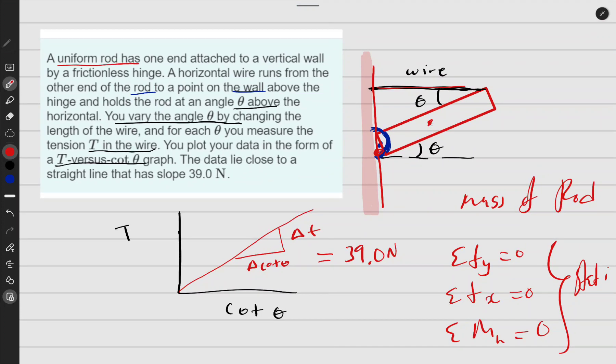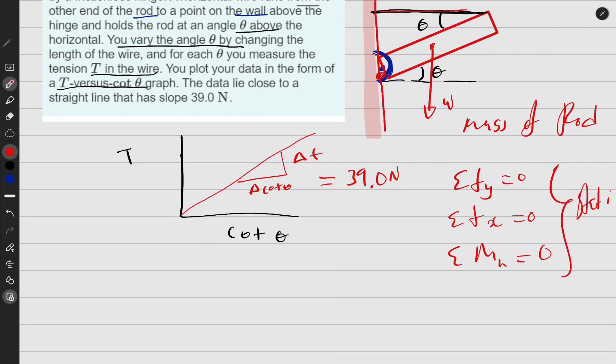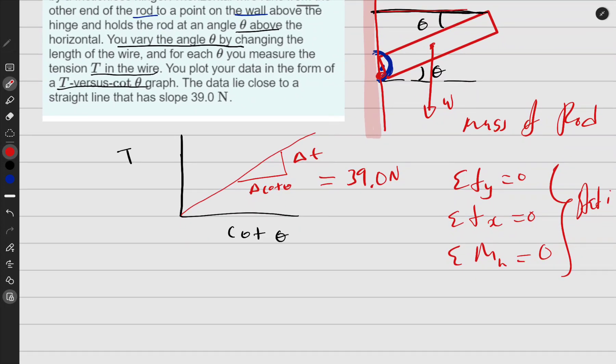So I'm going to take my moments about the hinge. Okay, and also I know they said something—it's a uniform rod. Okay, that means center of mass is here. There is weight here. Okay, let me take my moments about this. Let me call this thing—let me say this thing has length L. Let me just go down there. So sum of the moment about point hinge should be zero.